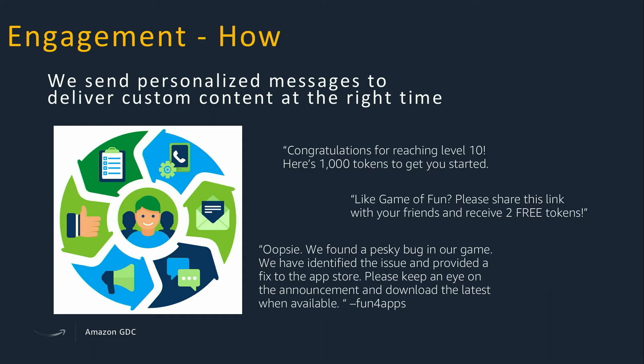So how do we do that? We have three channels available: SMS — send a congratulations message if we have their phone number — push notification, or an in-app notification or email if we have their email. If somebody signed up with Facebook or Google, we have their email address. We can send them specific details about what's going on with the app. These are three different channels to engage our users.